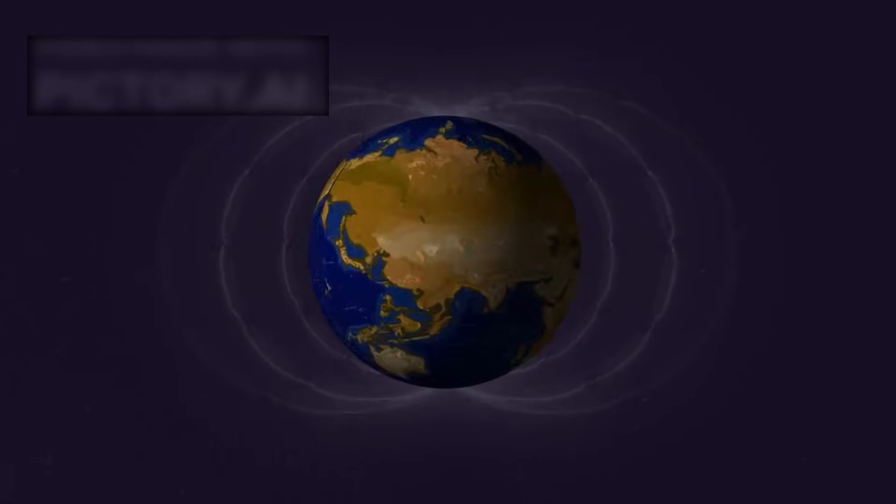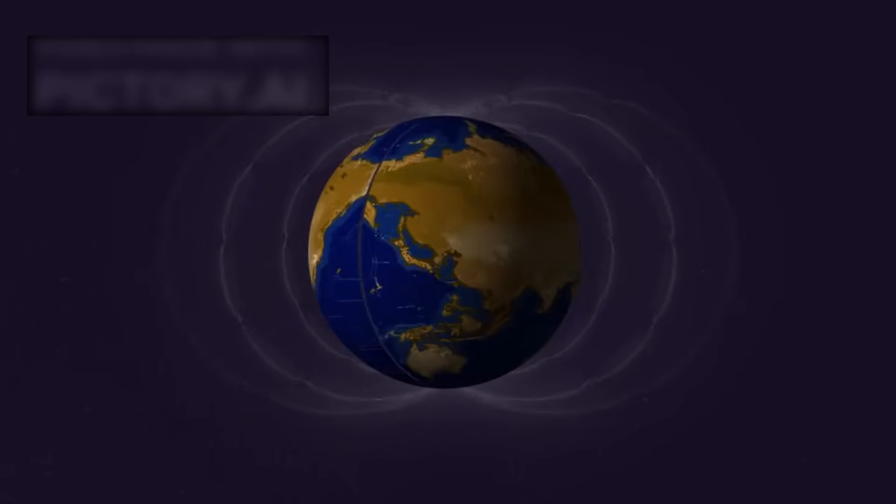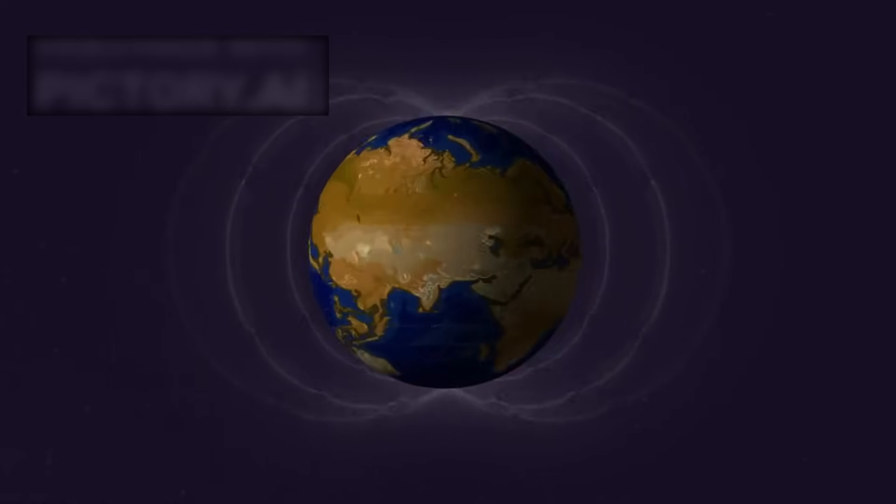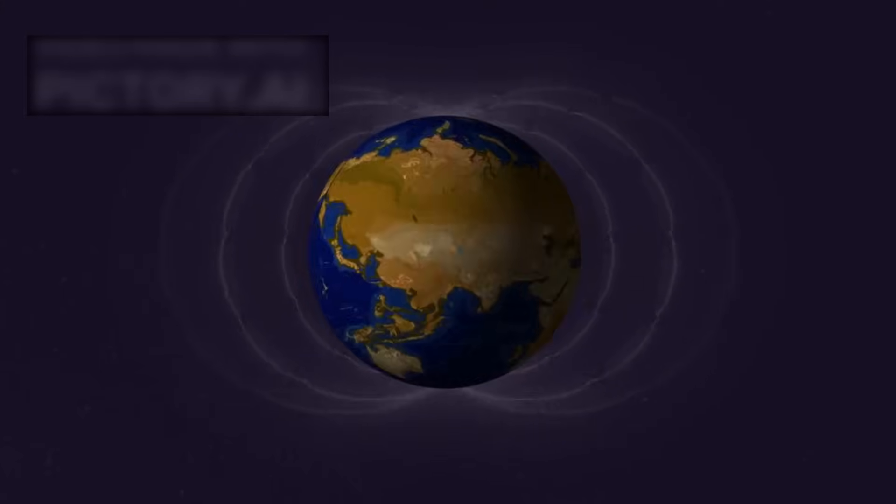Proxima b, though bombarded by intense radiation from its host star, may possess an unusually strong magnetic field. A feature that would protect its surface from harmful radiation, similar to how Earth's magnetosphere shields us.